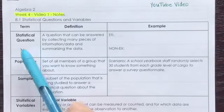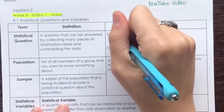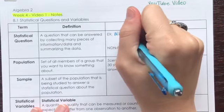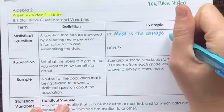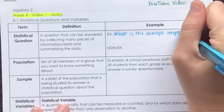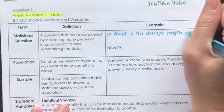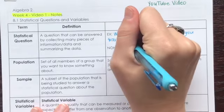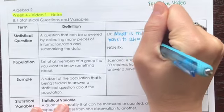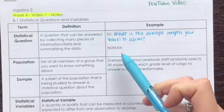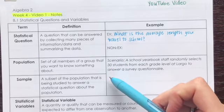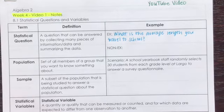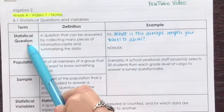An example of a statistical question would be: what is the average length you travel to school? If I asked this to all of my students, someone only takes 20 minutes, someone takes 30 minutes — I'd have to collect all that data, analyze it, and figure out what the average length of time is to travel to school. That would be an example of a statistical question.